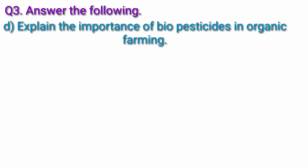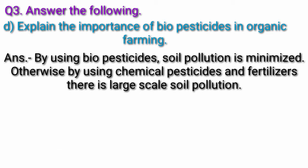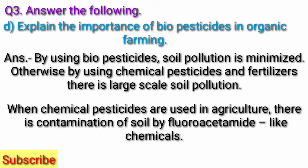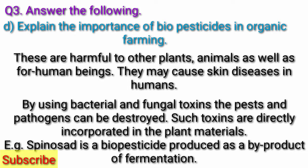Explain the importance of biopesticides in organic farming. By using biopesticides, soil pollution is minimized. Otherwise, by using chemical pesticides and fertilizers, there is large-scale soil pollution. When chemical pesticides are used in agriculture, there is contamination of soil by fluoroacetamide-like chemicals. These are harmful to other plants, animals, as well as human beings. They may cause skin diseases in humans. By using bacterial and fungal toxins, the pests and pathogens can be destroyed. Such toxins are directly incorporated in the plant materials.